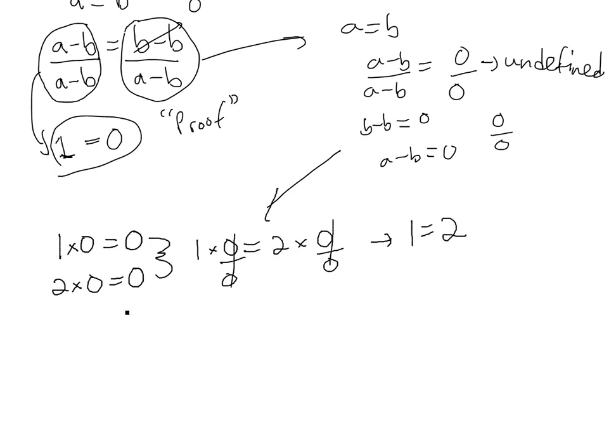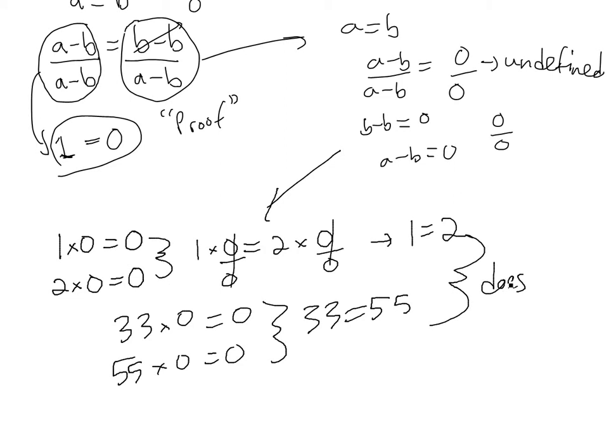And it doesn't matter what number it is. Let's say we have 33 times 0 equals 0, we'll get like 55 times 0 equals 0, and then similarly you'll get 33 equals 55. So this doesn't make any sense, it doesn't make sense.